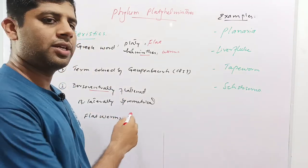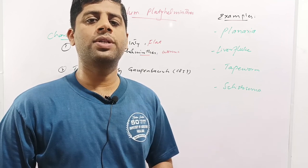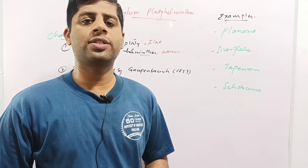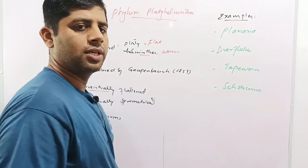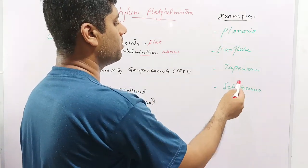Platyhelminthes are bilaterally symmetrical. The members can be divided into two equal halves by an imaginary line. The common examples of phylum Platyhelminthes are planaria, liver fluke, tapeworm, and schistosoma.